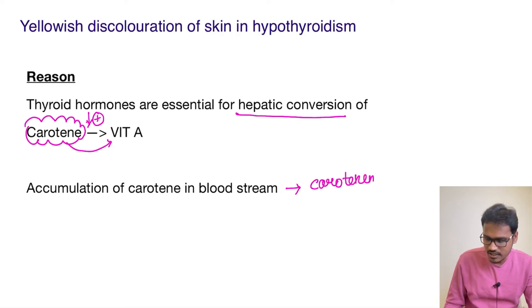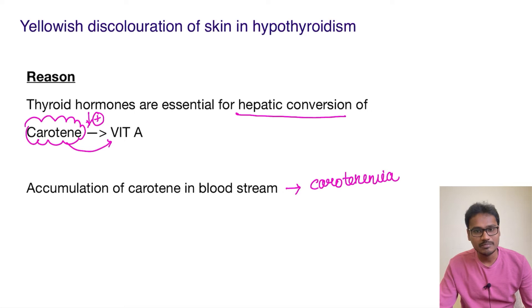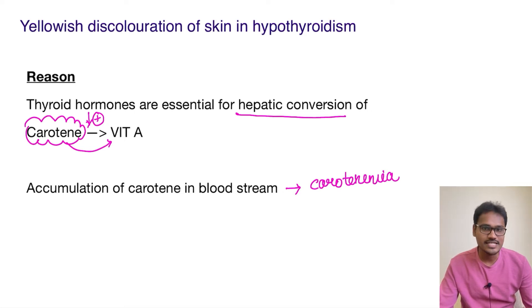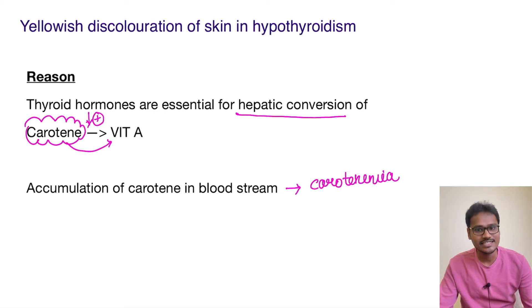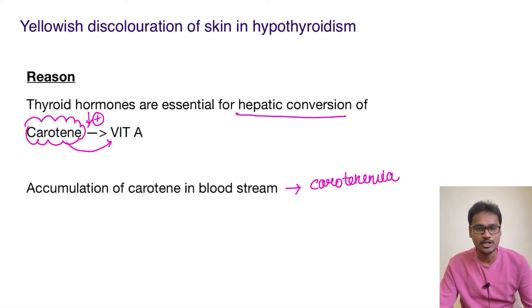Carotene is a yellowish-color pigment, so its accumulation causes yellowish discoloration of the skin. We also see yellowish discoloration of the skin in jaundice, which is due to hyperbilirubinemia.